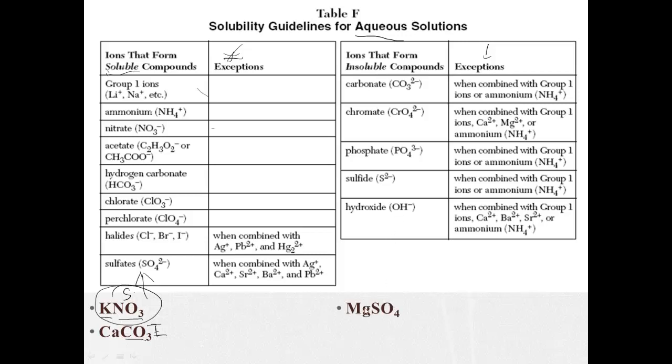MgSO4, magnesium sulfate. Let's look here. Sulfates are generally soluble. So the fact that there's a sulfate tells us it should be soluble. But let's see if magnesium is an exception. Except when combined with silver, calcium, strontium, barium, or lead. Nope, none of those is magnesium, so it's not an exception. So magnesium sulfate is soluble. Ammonium hydroxide. Ions that form soluble compounds - ammonium forms a soluble compound with zero exceptions. So this is going to be soluble.